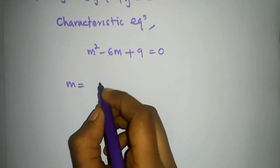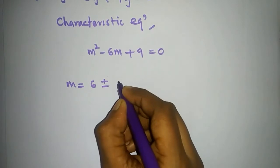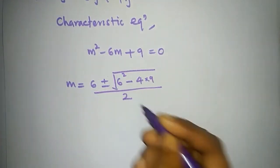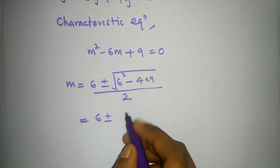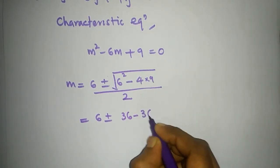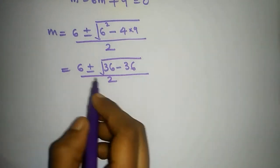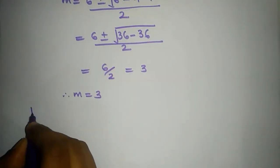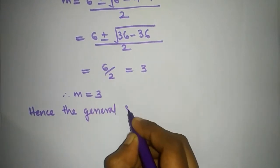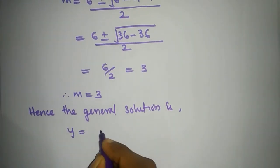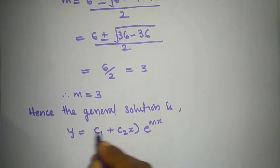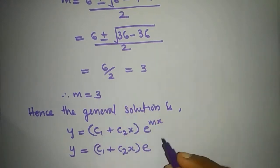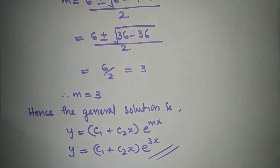For m, applying the quadratic formula: 6 plus or minus the square root of 36 minus 36, divided by 2, which gives zero under the radical. So m equals 3. The general solution is y equal to (c1 plus c2·x) times e raised to 3x.